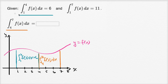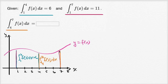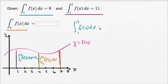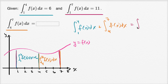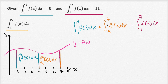They also gave us the definite integral from one to seven, which goes from one all the way to seven — that's the sum of these two regions. So we can rewrite this as: the definite integral from one to four of f of x dx, plus the definite integral from four to seven of f of x dx, is equal to the definite integral from one to seven of f of x dx. The first part covers area from one to four, then we go from four to seven, and if you add those together, that's the area from one to seven.